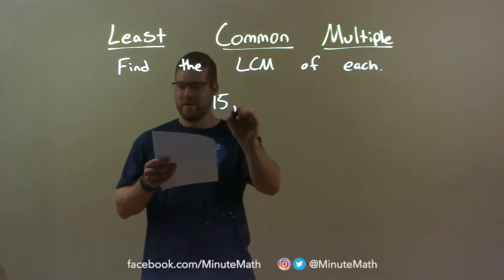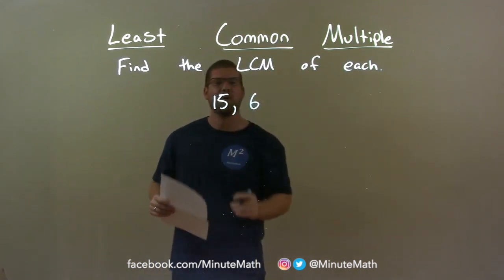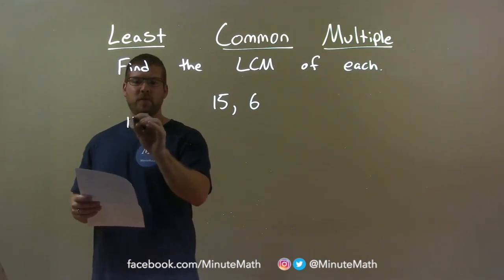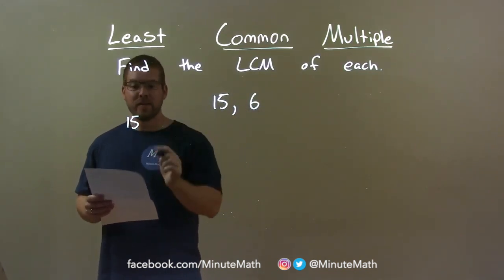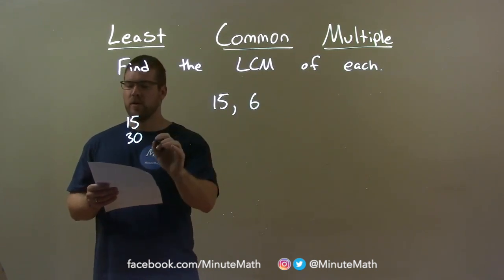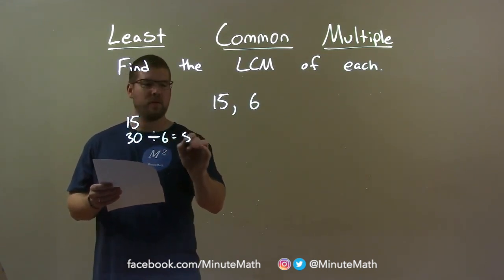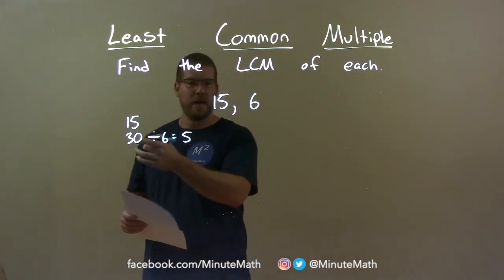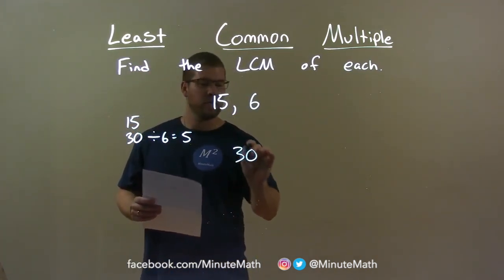15 and 6. The largest number is 15, and I find the multiples of that. Does 6 go into 15? No. The next multiple is 30. 6 goes into 30 — 30 divided by 6 comes out to be 5. It goes in evenly. So our smallest multiple there is 30.